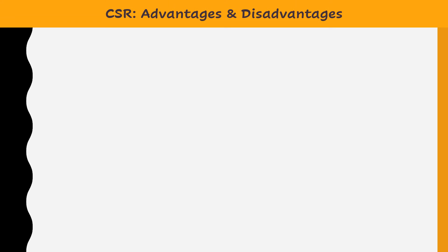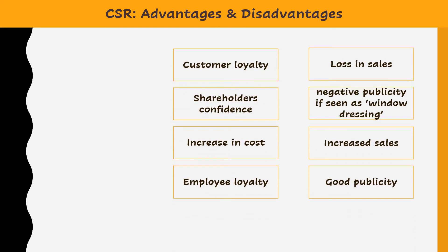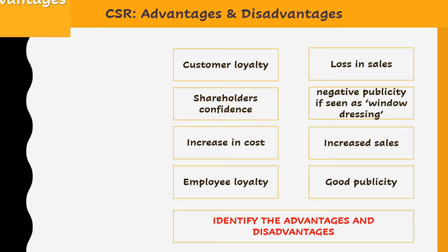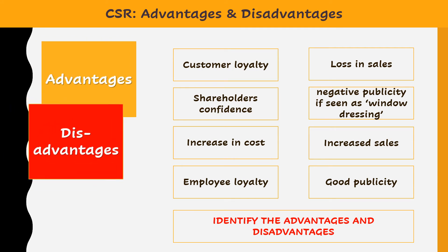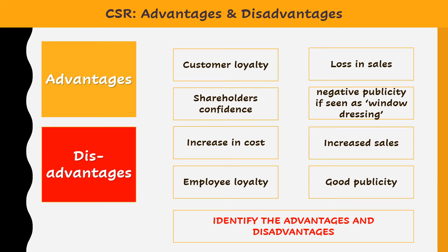Now that you understand a little about what corporate social responsibility means, let's try an activity. You need to figure out and categorize the advantages and disadvantages into the proper slots, because they're all jumbled up on the slide. There are four advantages and four disadvantages, all mixed up — rearrange them and we'll check the answers on the next slide.